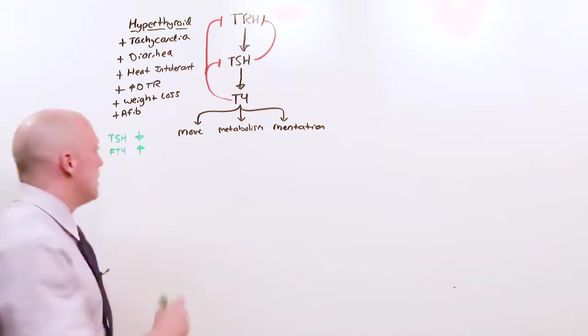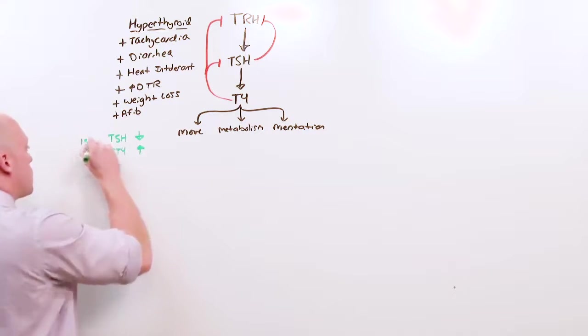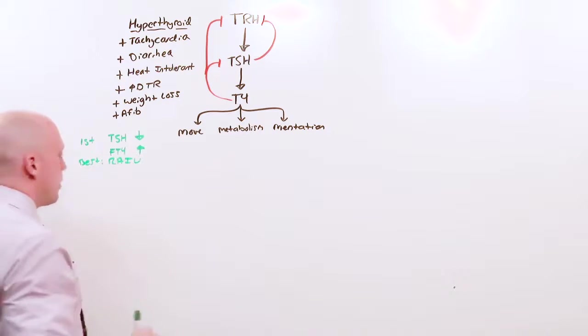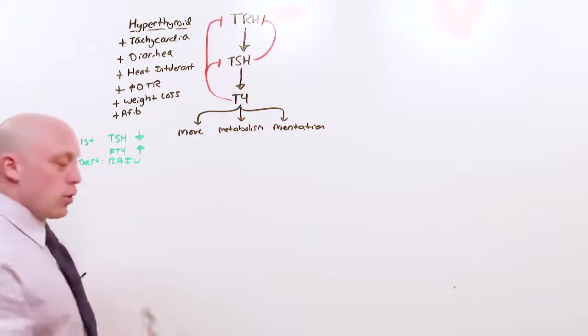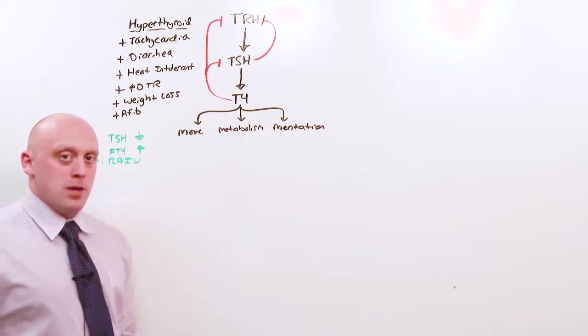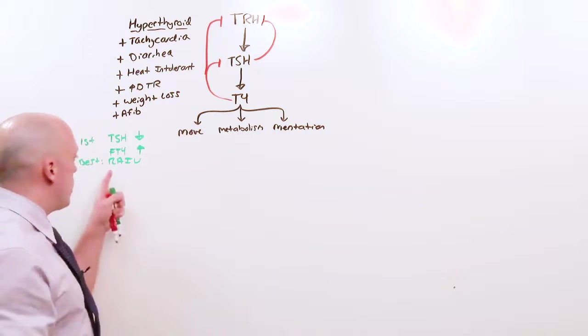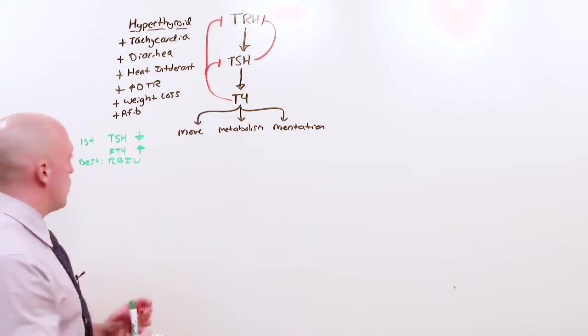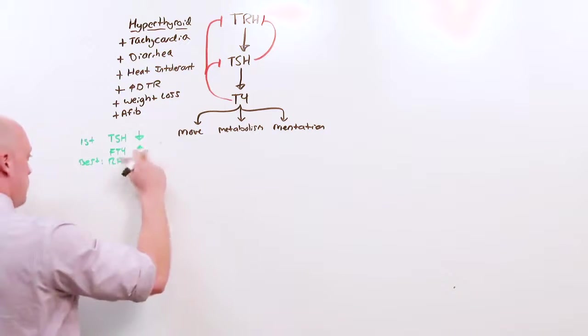What you're going to get asked is how do you interpret the RAI uptake scan, the radioactive iodine uptake. What we'll do is list the diseases of hyperthyroidism and show you how the radioactive iodine uptake separates them. All will have low TSH, increased T4.